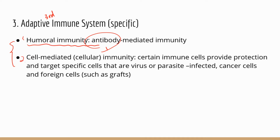The second arm, cell-mediated immunity, has nothing to do with antibody. Instead, it involves specific cells to provide protection. Cell-mediated immunity is very similar to NK cells — they target cells that have been infected, whether by a virus or a parasite. That's because viruses or parasites live inside the cells, so antibodies or phagocytes can't do anything about it. You need a different type of defense to fight the infected cells.